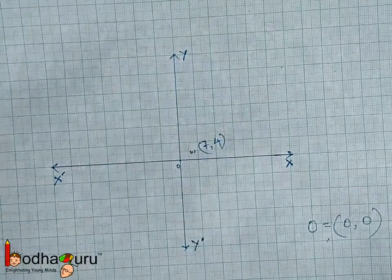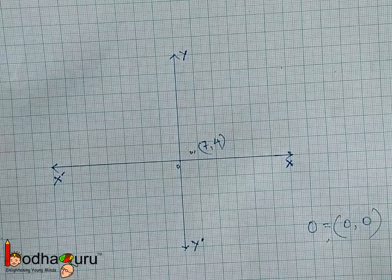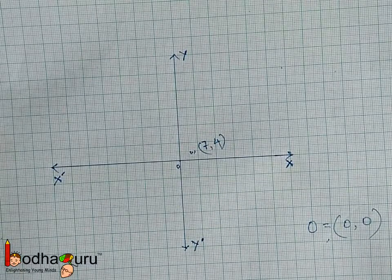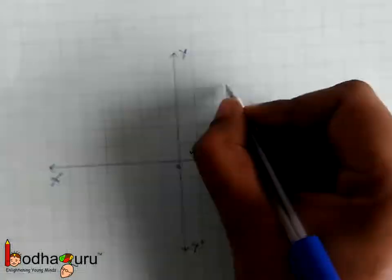Like 7,4 coordinate specifies a certain point on the graph. This is Cartesian coordinate system.